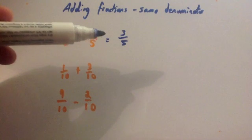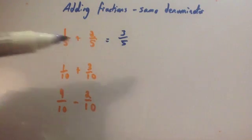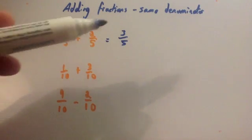So you just add the numerator but keep the denominator the same. Adding fractions with the same denominator is fairly easy. The main thing is that you don't add the denominators.